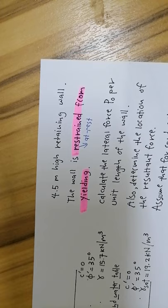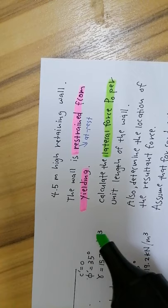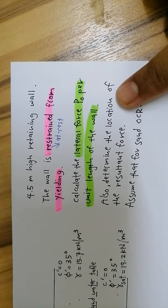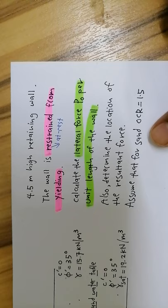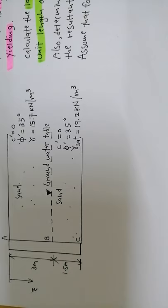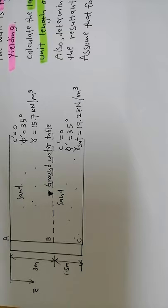The first task is to calculate the lateral force Po per unit length of the wall. The second is to determine the location of the resultant force. We are also given that the OCR (over-consolidation ratio) for the sand is 1.1.